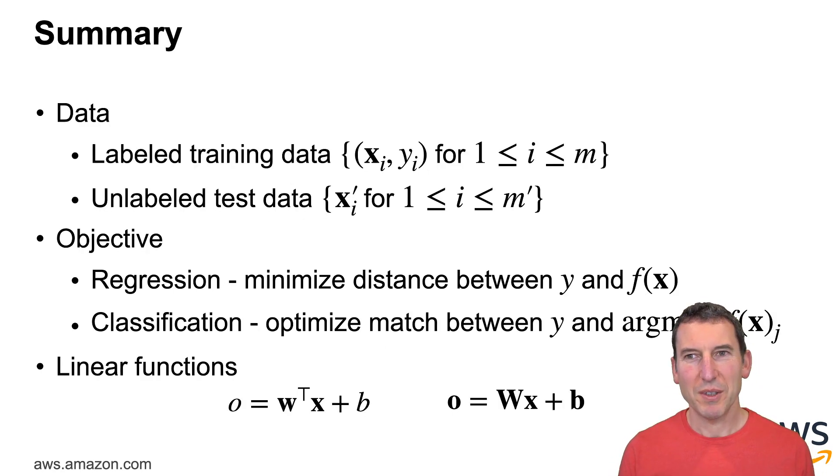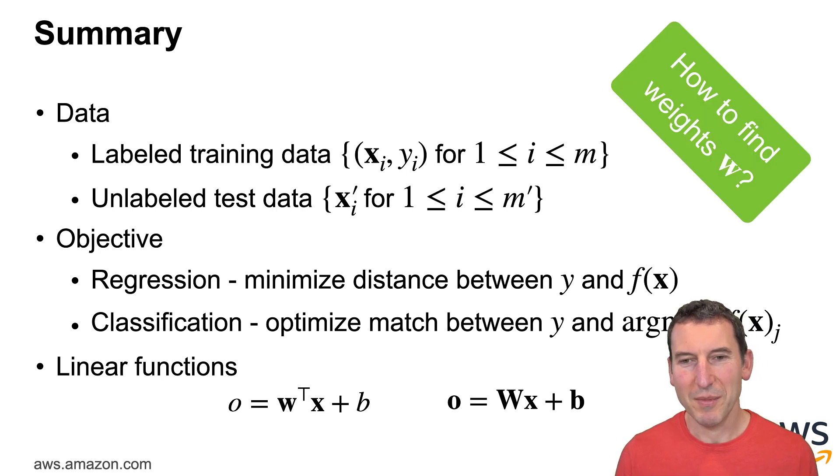So in summary, we have some training data, usually a labeled training set of xi yi pairs and some unlabeled test data. Our objective is to minimize the distance between the y's and the f of x's. In classification we want to optimize the match between the y's and the argmax j of f of x j. For regression we have a simple linear function w transpose x plus b and for classification we have a matrix vector multiply. So the goal of this deep learning class is how to find those weights w and biases b. Basically linear offsets, but in general when people talk about weights they mean all the parameters of a network. I'm going to be loose here and just talk about weights w.